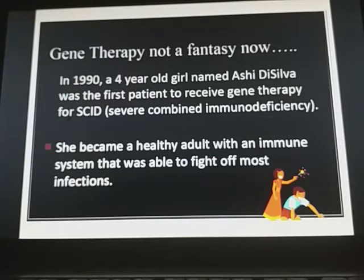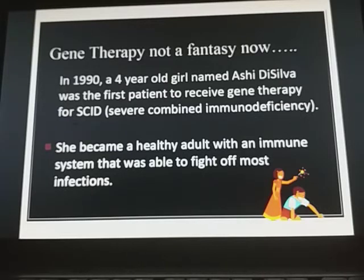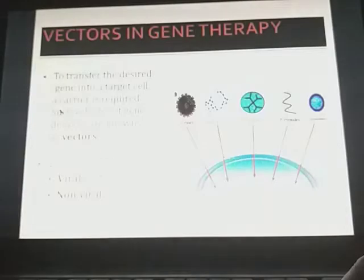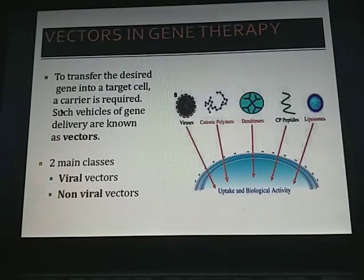Ashanti de Silva was the first patient to receive gene therapy for severe combined immunodeficiency. She became a healthy adult with an immune system able to fight off most infections.